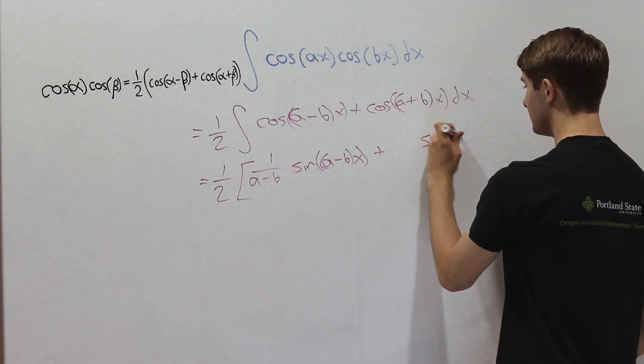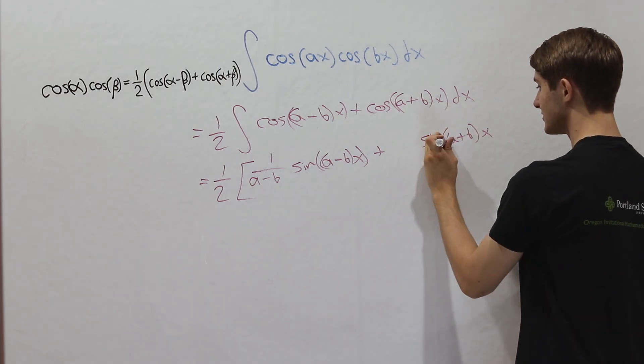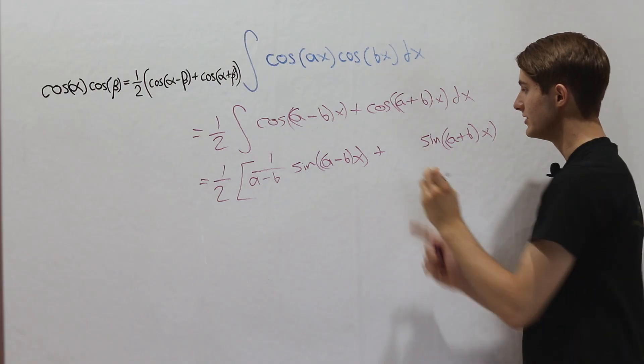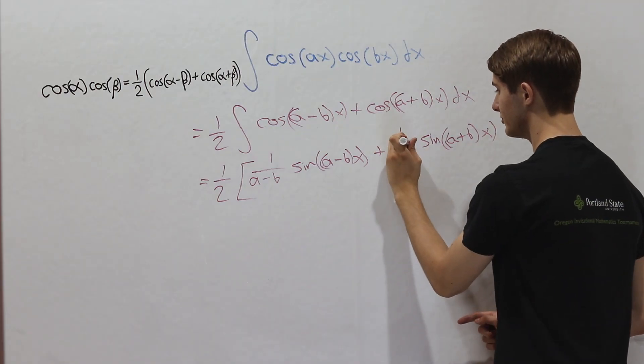Then we can do the same thing for this second term. We're going to get sine of a plus b times x, and then we divide by this constant multiple 1 over a plus b.